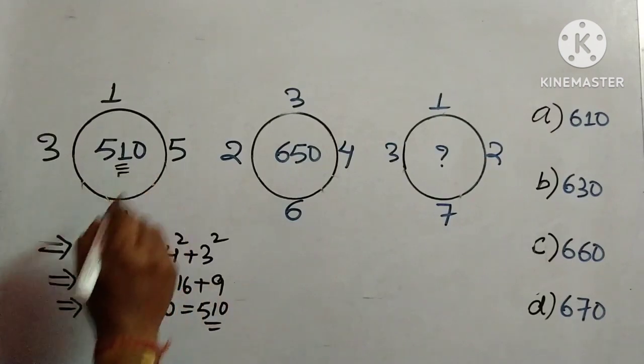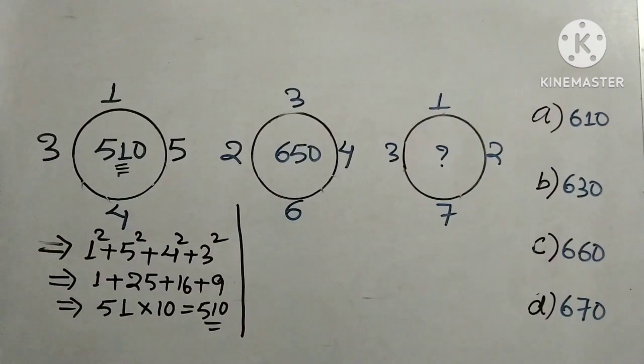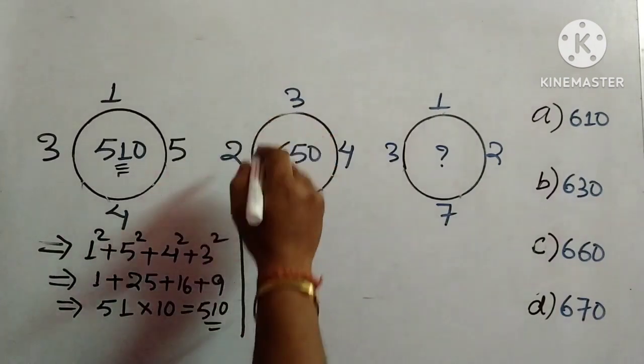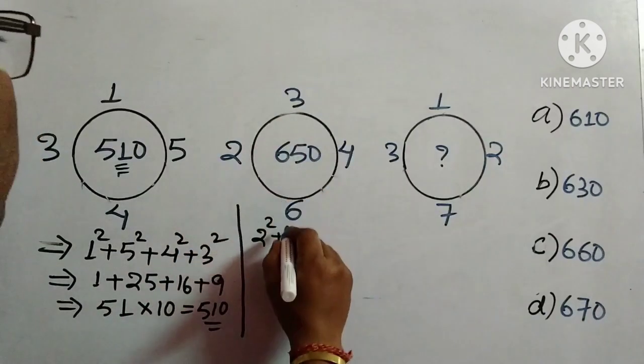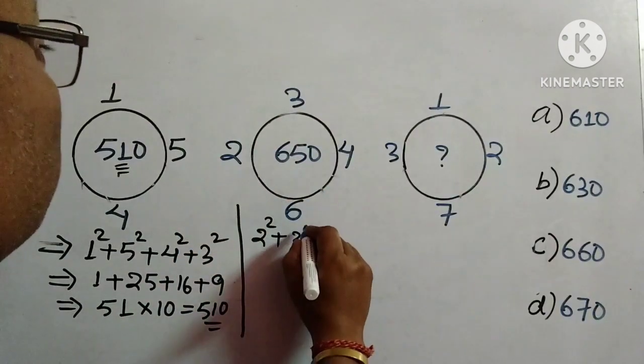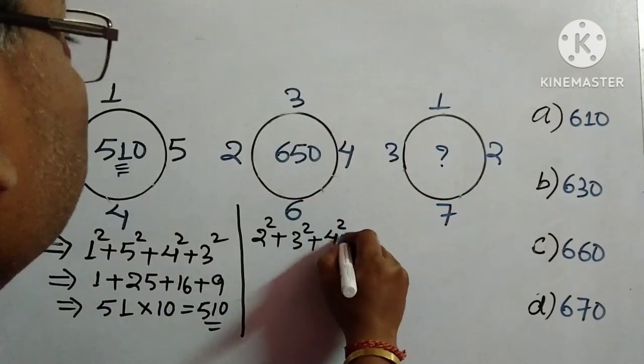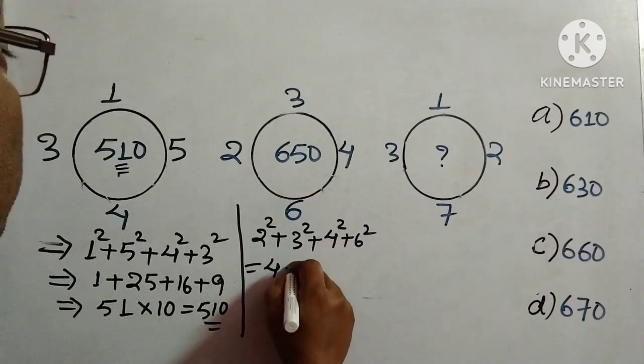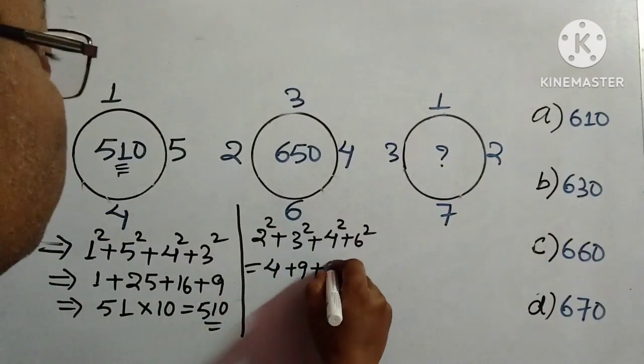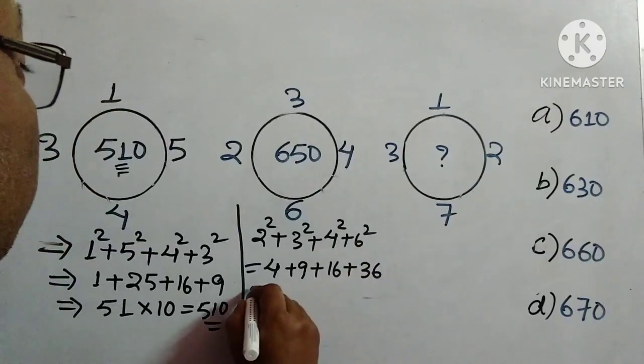We will check this process in the second figure. What we will do is square the outermost numbers: 2² + 3² + 4² + 6² + 6². We will add them. So 2² is 4, 3² is 9, 4² is 16, and 6² is 36.